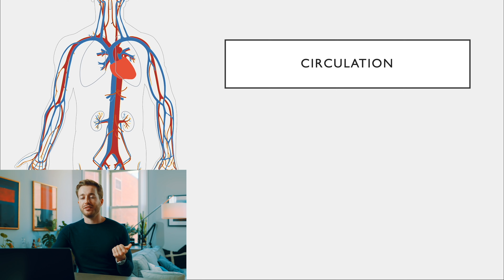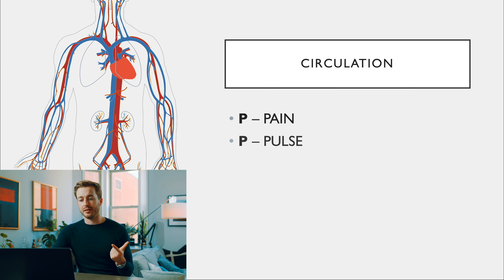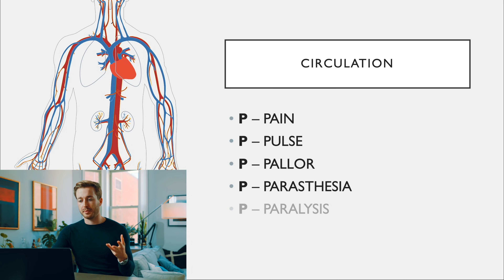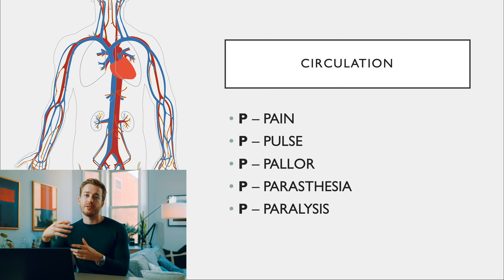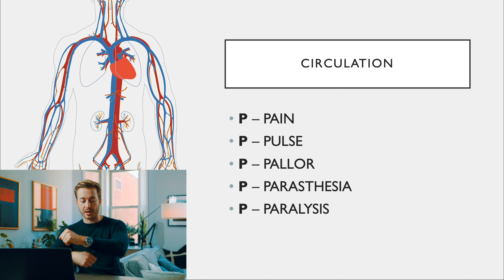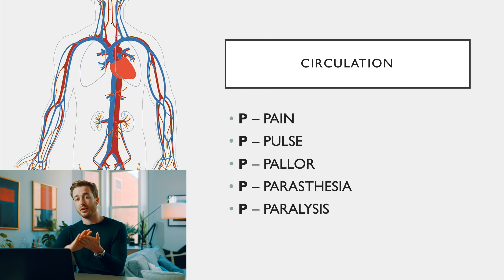The next mnemonic is the five Ps: pulse, pain, paresthesias, pallor, and paralysis. These are all things to look out for if, for example, you have a new dressing on someone and you're worried about cutting off circulation to their hand.